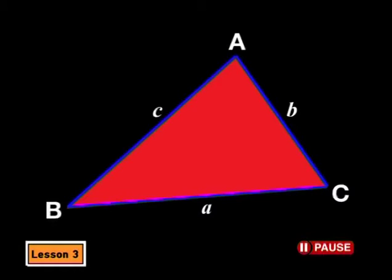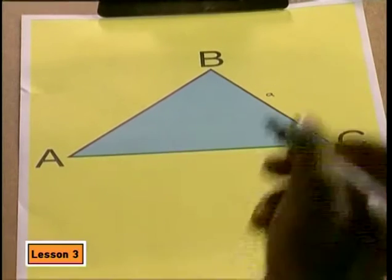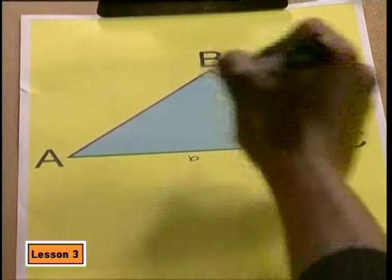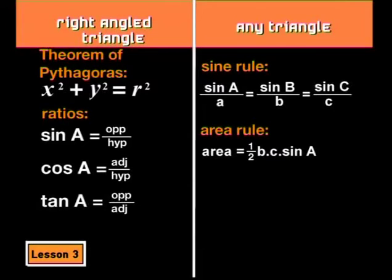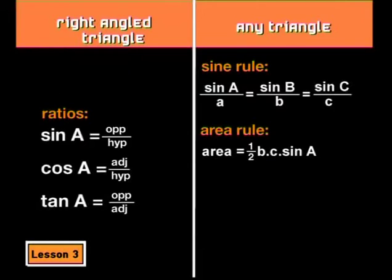First question. If you know the length of all the sides of that triangle, can you find the angles of the triangle? Well, we know the lengths of A here, B here and C here. There's no right angle, so we can't use Pythagoras and we can't use the trig ratios.